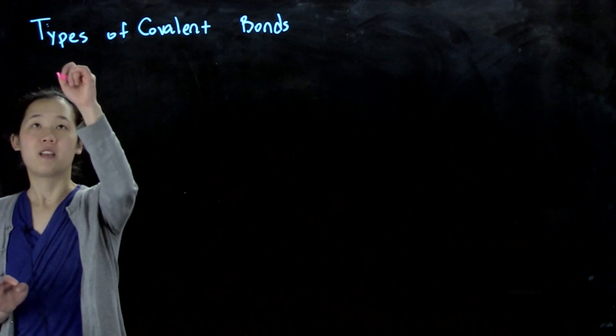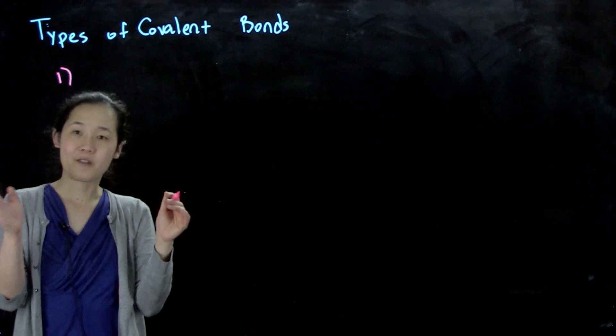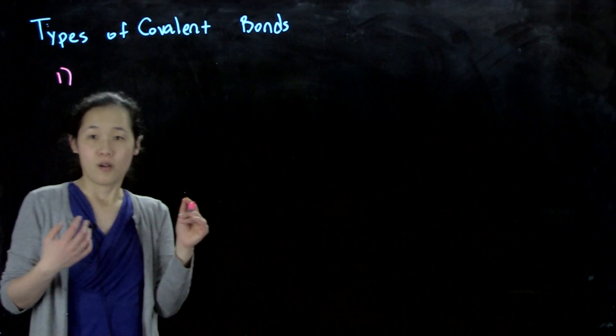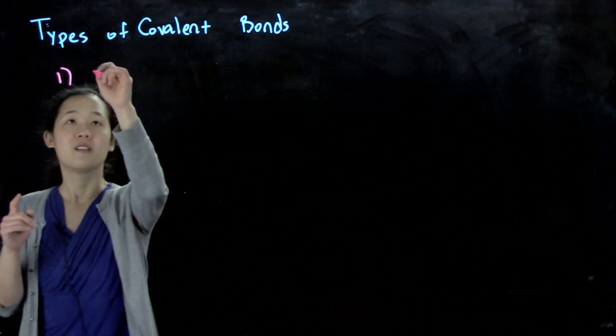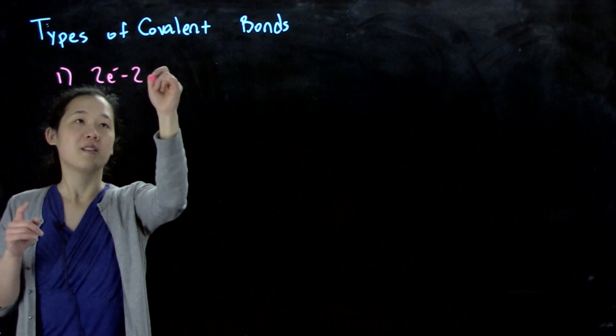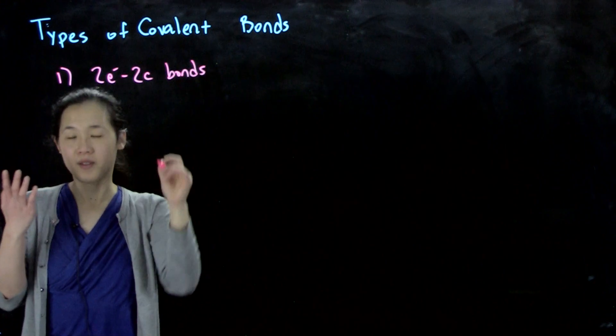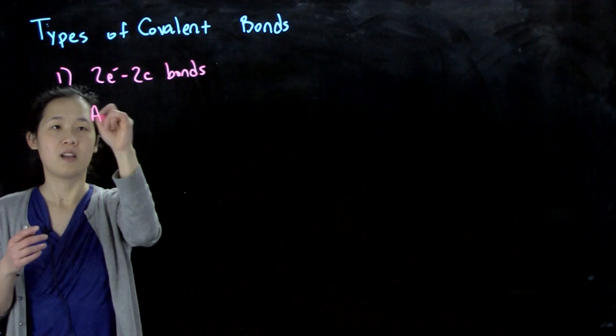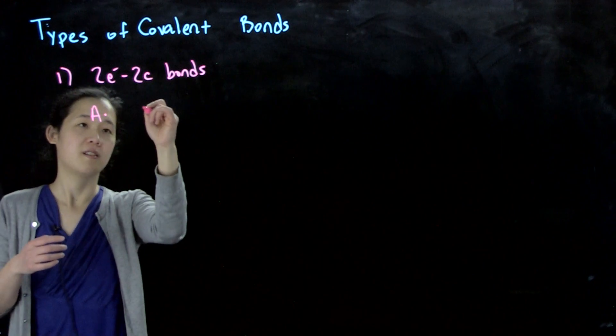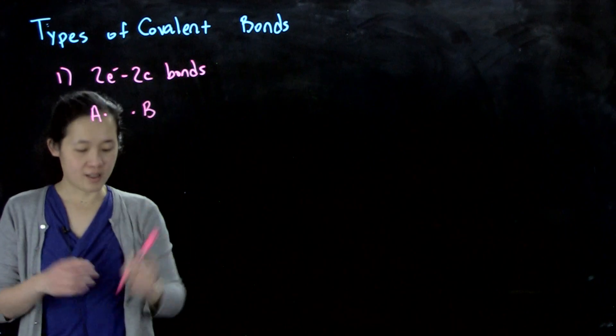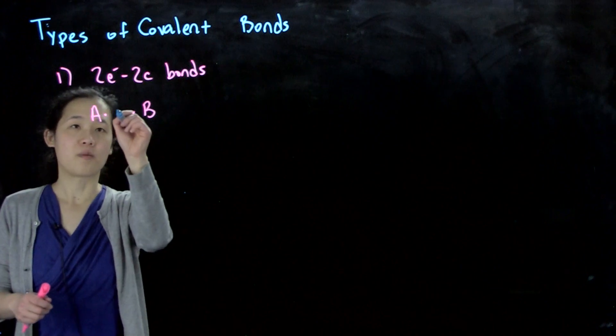The first one is the classic example you've been doing in organic chemistry: two electron, two center bonds, where they come from the same place. We have A with one electron, B with one electron, and then together they form that bond.